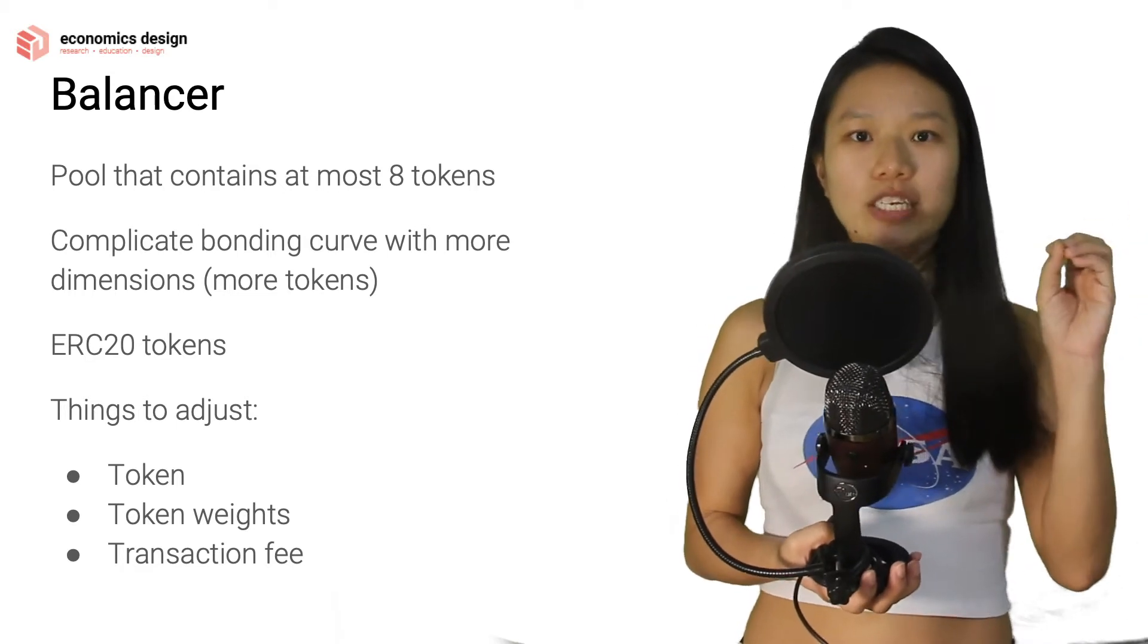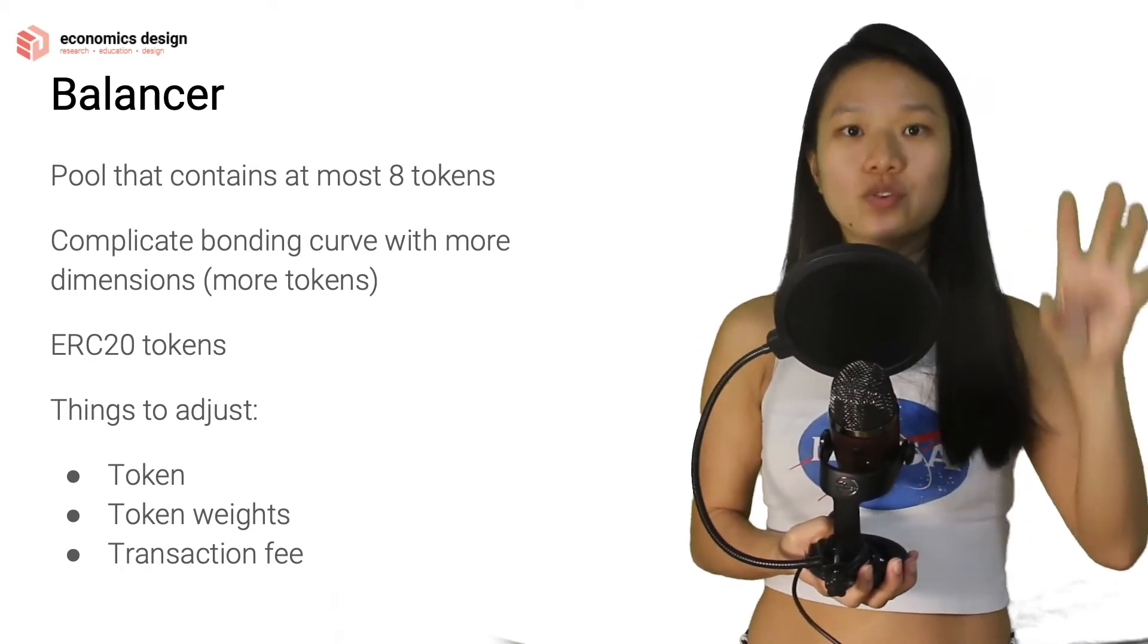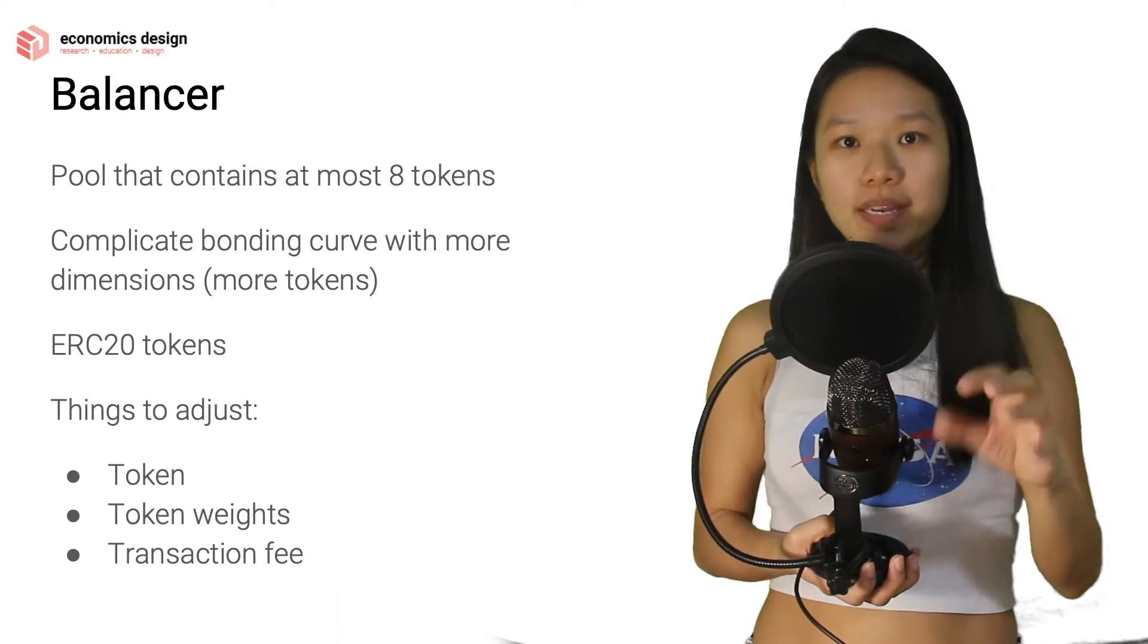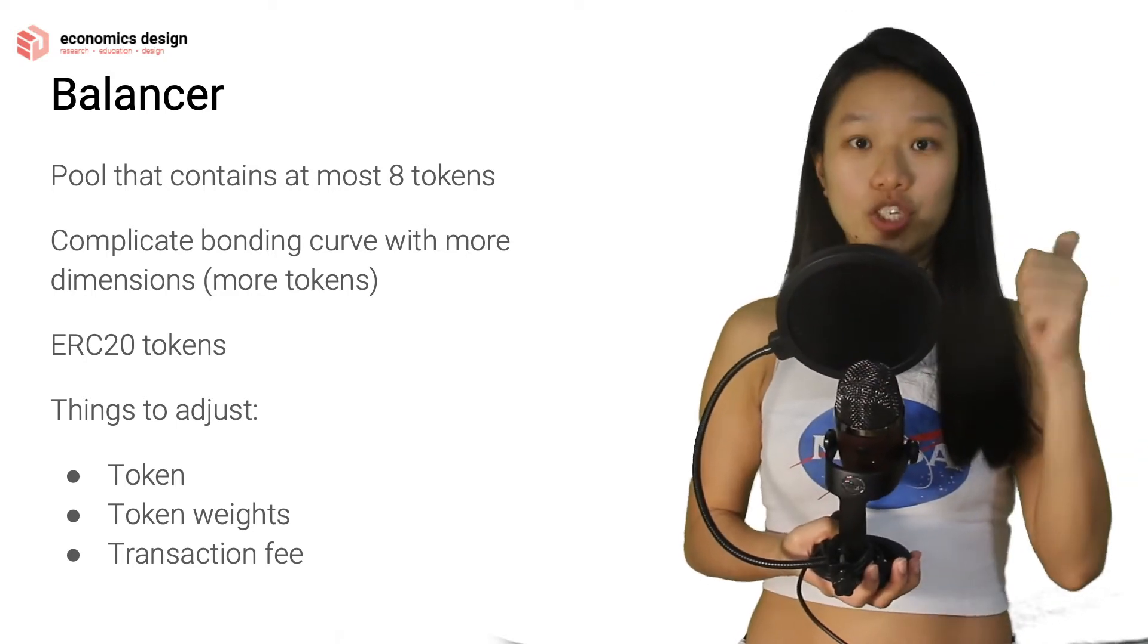In Bancor and Uniswap, you can't really change the weights - everything is either fixed or done dynamically. With Balancer, you get to choose a little bit more and adjust the tokens.